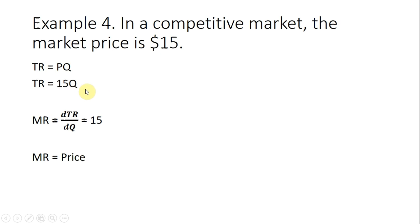Marginal revenue is the derivative of total revenue. Here we get 15. Marginal revenue is constant in perfect competition every time you sell one more unit. In this example, total revenue goes up by $15. And as we know, marginal revenue will equal price in perfect competition.